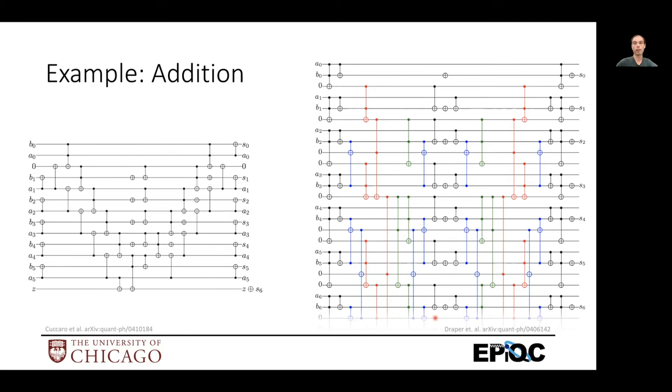So this one on the right looks a little bit more complicated, but it's actually faster than the Cuccaro adder. And you can see this because in the Cuccaro adder, you have this linear structure where you have this step, another step, another step.